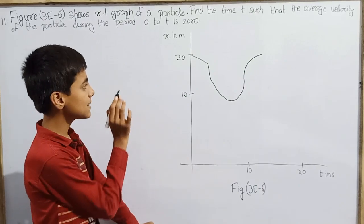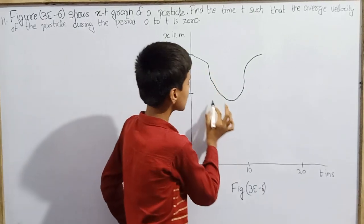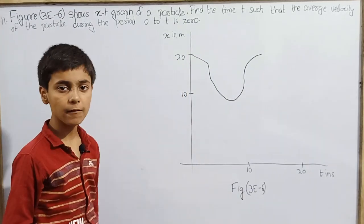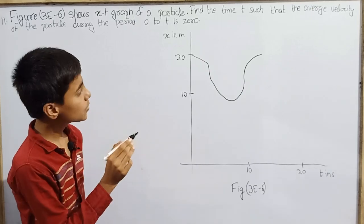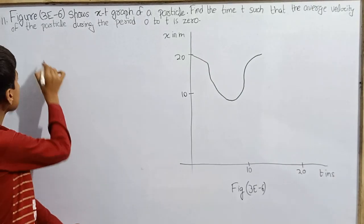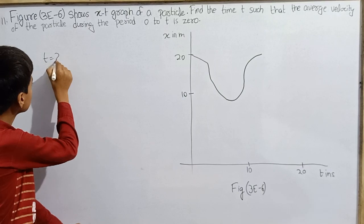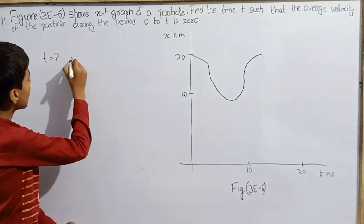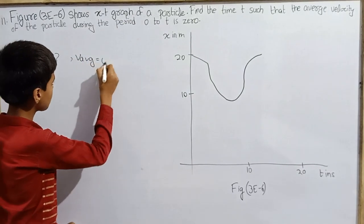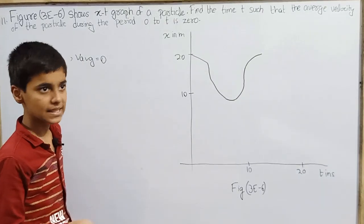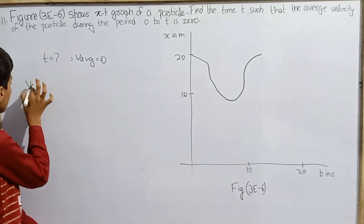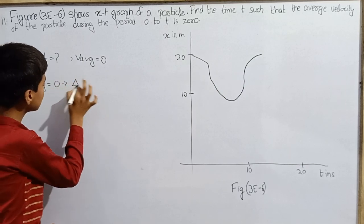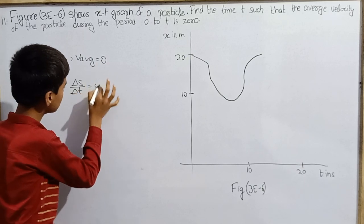This is our problem. Basically, we have a plot — an X versus t graph of a particle moving. Average velocity will be 0, so this is a very simple problem. We have to recognize that if the average velocity is 0, then displacement over time interval is also 0.